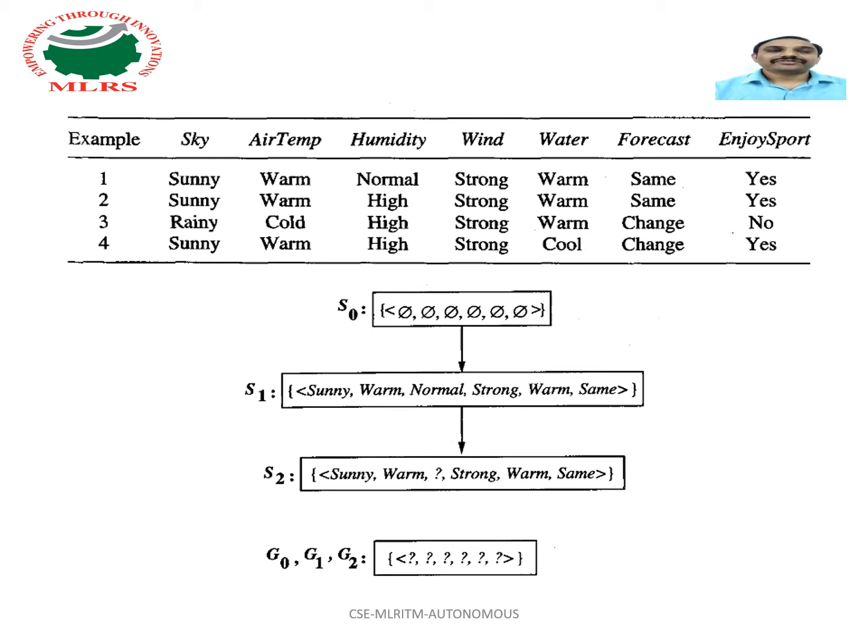The boundary is therefore revised by moving it to the least more general hypothesis that covers this new example. S0 contains all phi values, that is the most specific one.